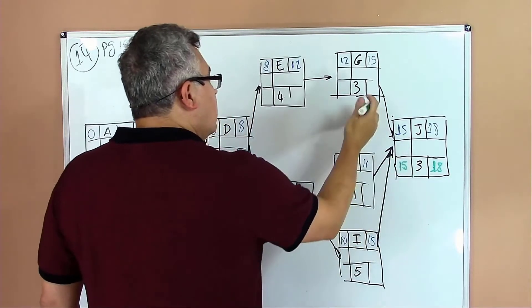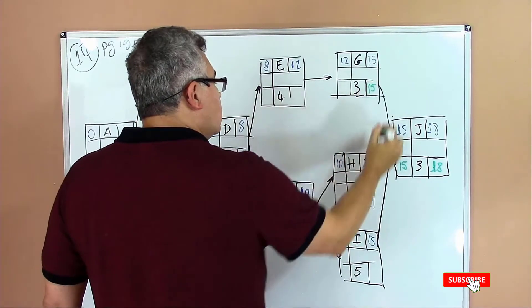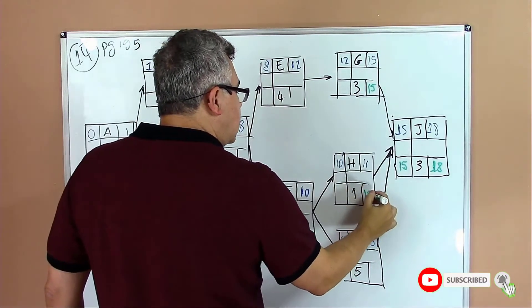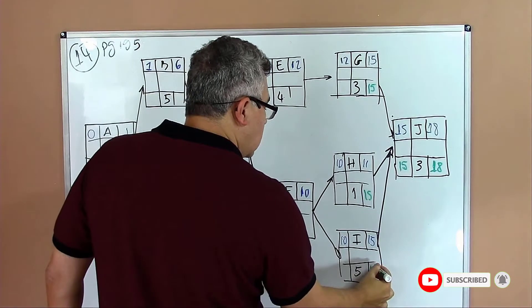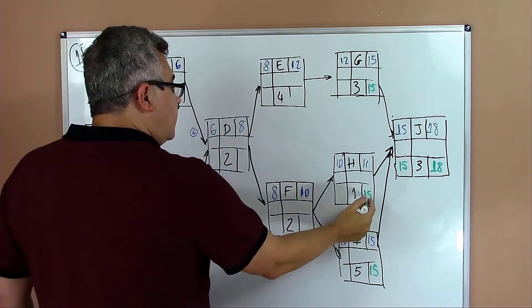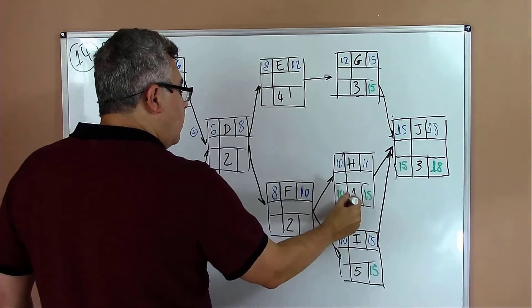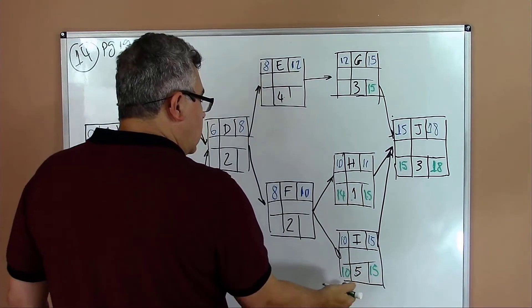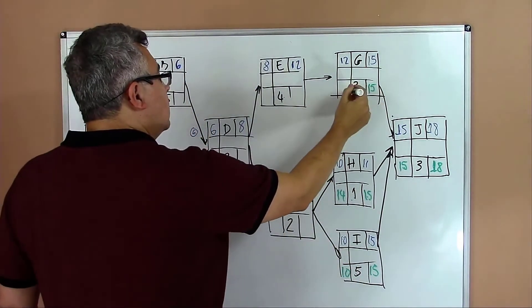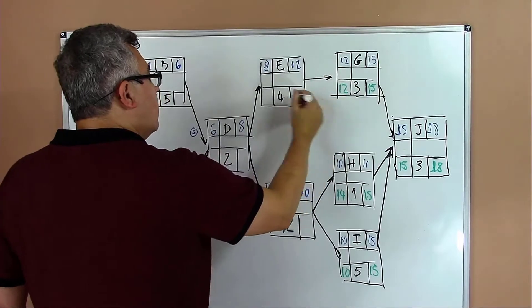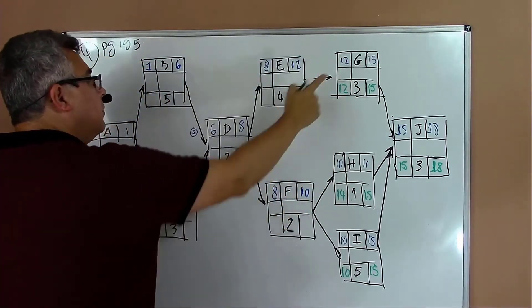In the backward path we go from eighteen and start subtracting the duration. Eighteen minus three equals fifteen. Then I move fifteen to the predecessors and I start computing. Fifteen minus one equals fourteen. Fifteen minus five equals ten.